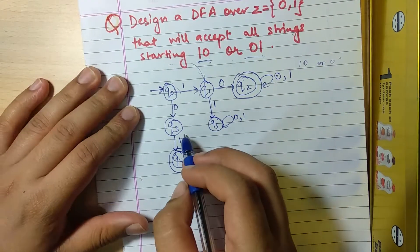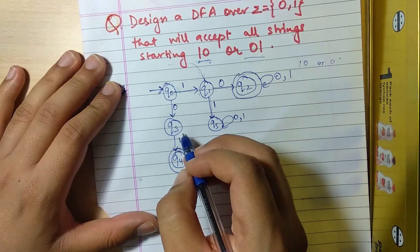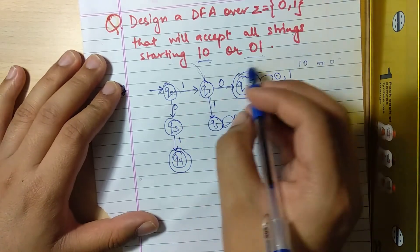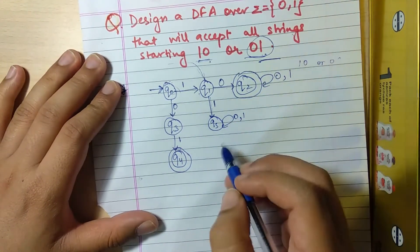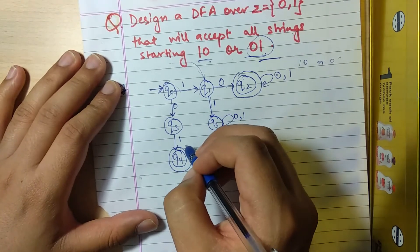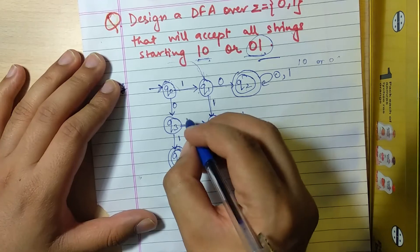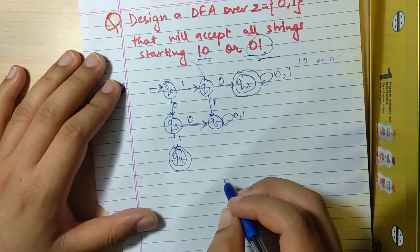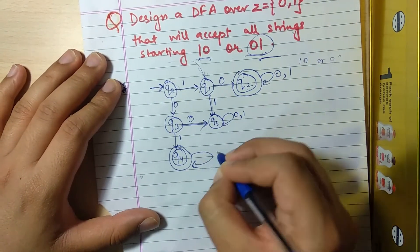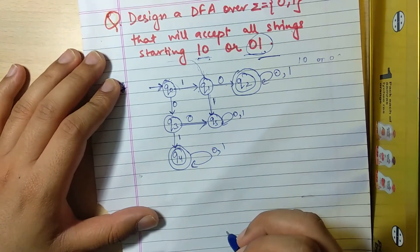For q3: if it encounters '1', it goes to q4 — satisfying the '01' criteria. But if it encounters '0', similar to q1, we send it to q5, a dead state. We'll also draw the transitions for q4, and our first question is complete.